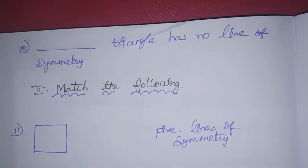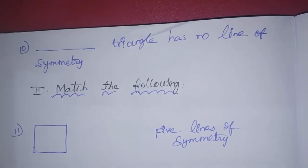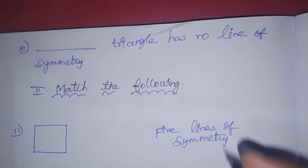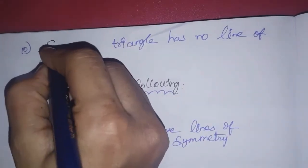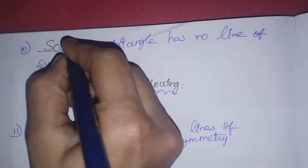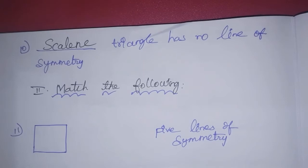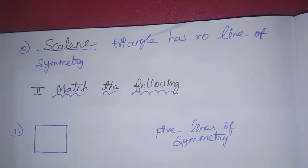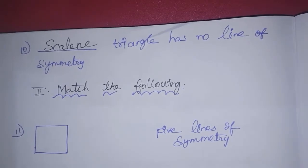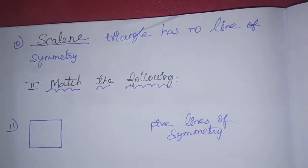The tenth sum: a blank triangle has no line of symmetry. What triangle has no line of symmetry? A scalene triangle has no line of symmetry — a scalene triangle has all sides different.